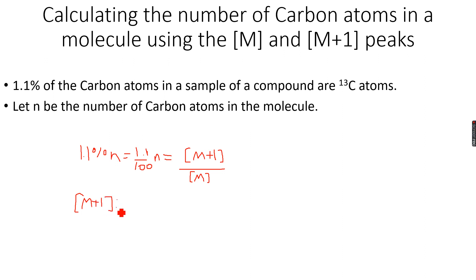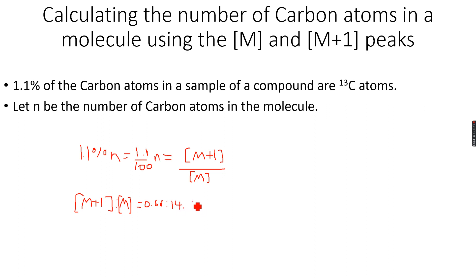The ratio of [M+1] to [M] is given as 0.66 to 14.5. You can see how large the difference is between the M+1 and M heights — this is the ratio of the heights, which represent relative abundances. Since we've been given these values, we can now calculate the number of carbon atoms.